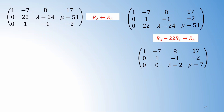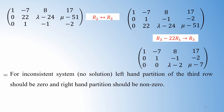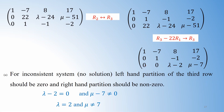We can now argue based on the values of lambda and mu. If the system is inconsistent, the left-hand partition should be entirely 0 but the right-hand side should be non-zero. That means lambda minus 2 equals 0 and mu minus 7 is not equal to 0 — i.e., lambda equals 2 and mu is not equal to 7. In that case, the system does not have any solution.